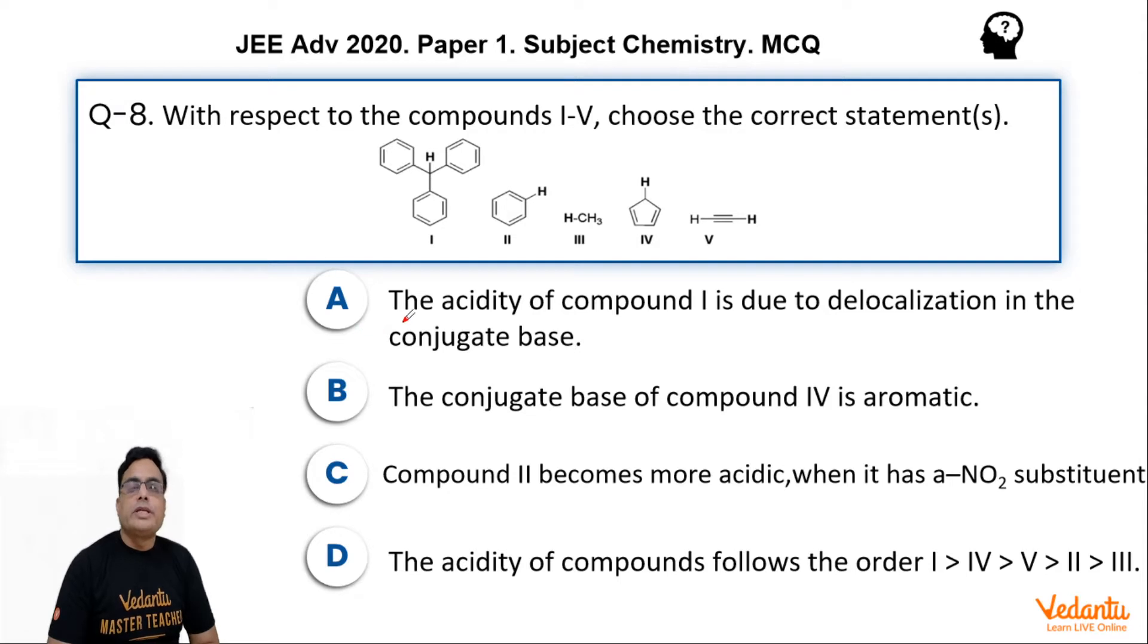Statement A says the acidity of compound 1 is due to delocalization in the conjugate base. Statement B says the conjugate base of compound 4 is aromatic. Statement C says compound 2 becomes more acidic when it has a NO2 substituent. And statement D is the acidity of compounds follows the order 1 > 4 > 5 > 2 > 3.